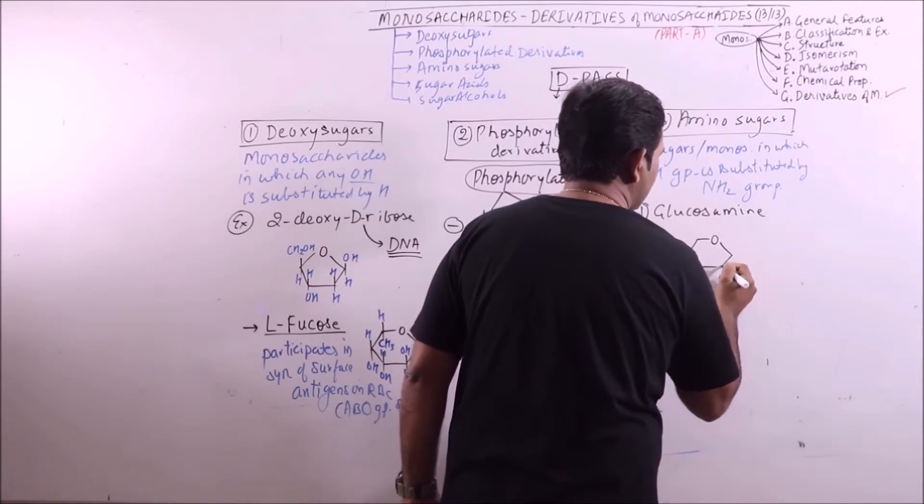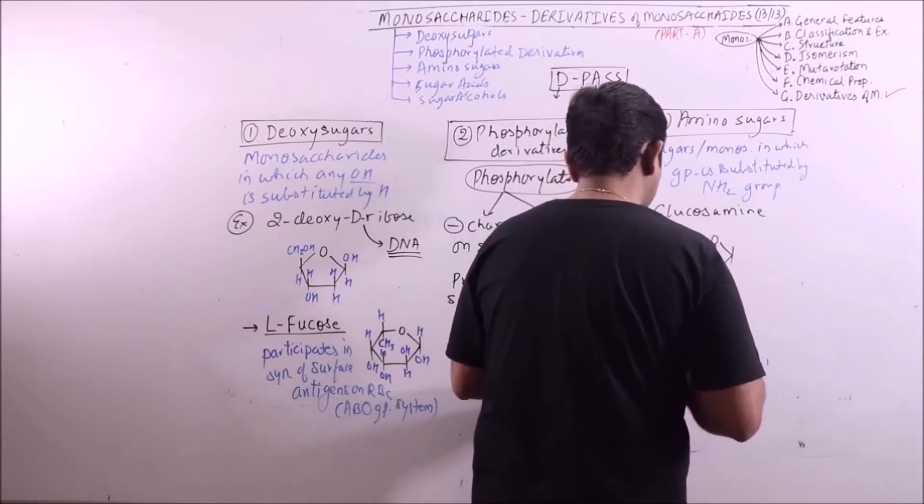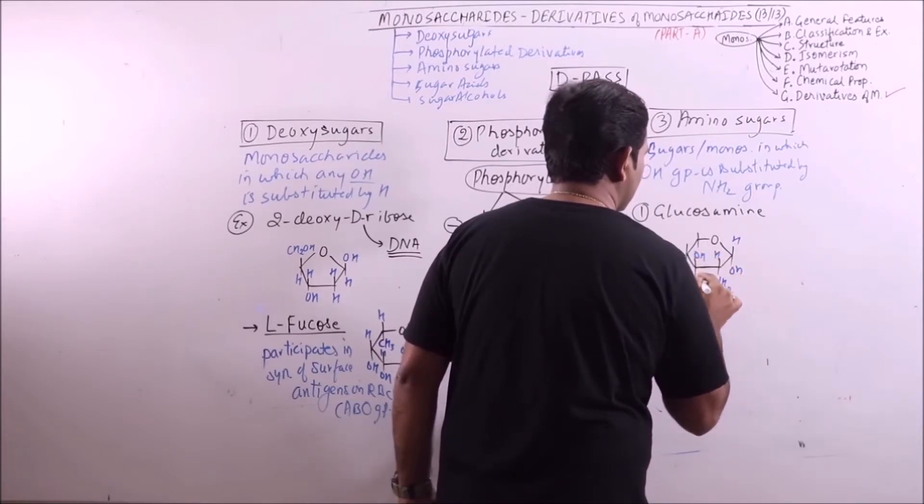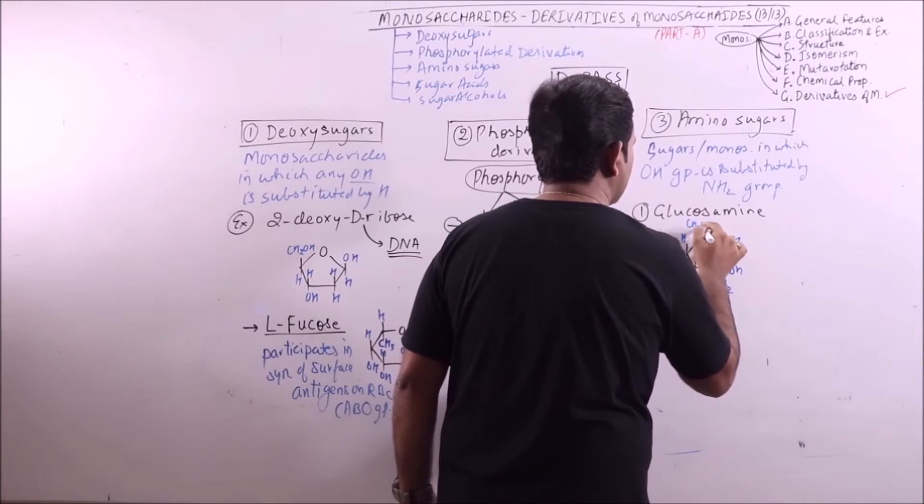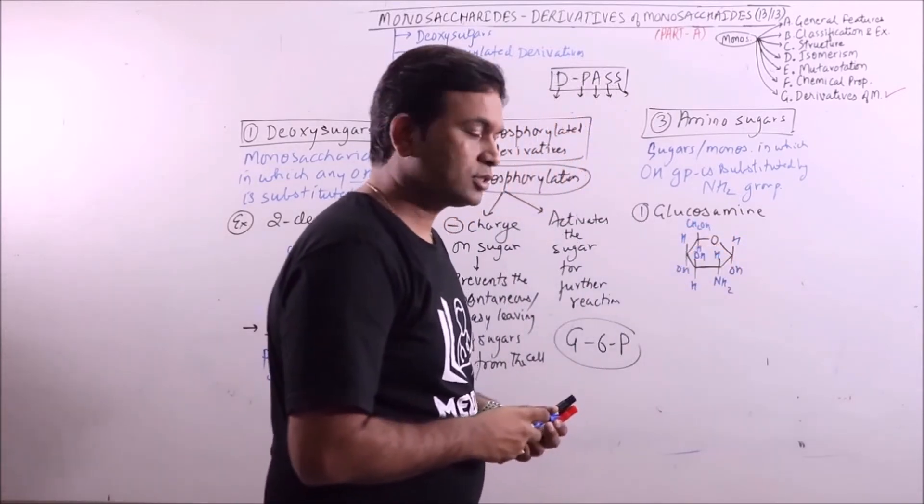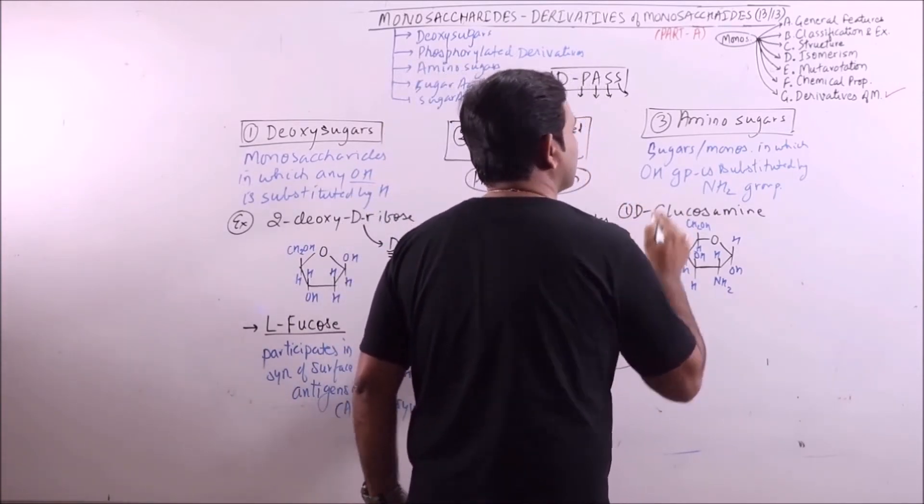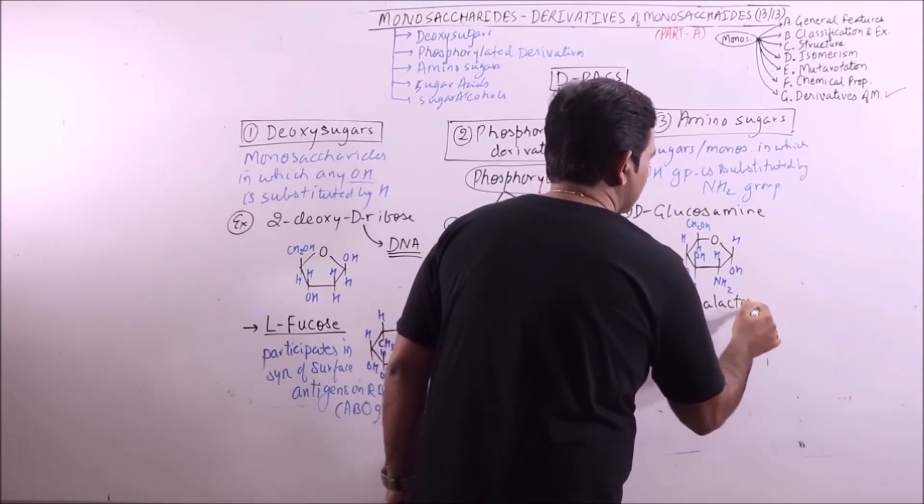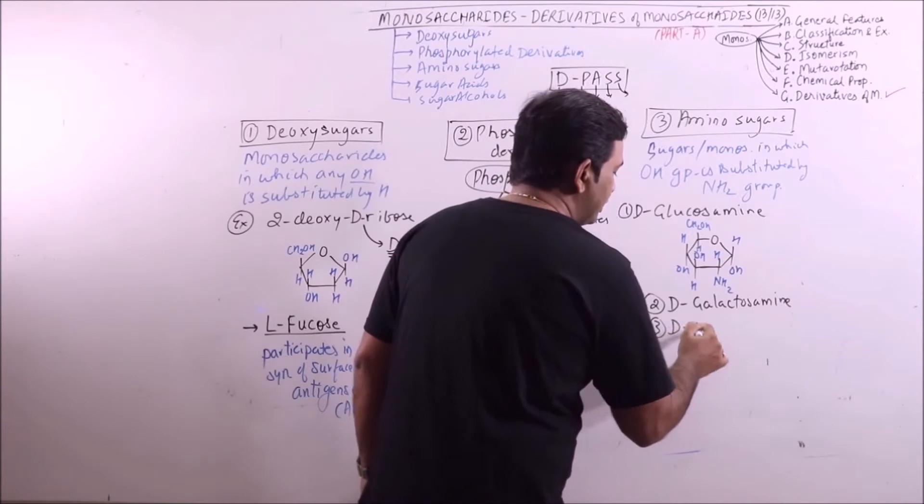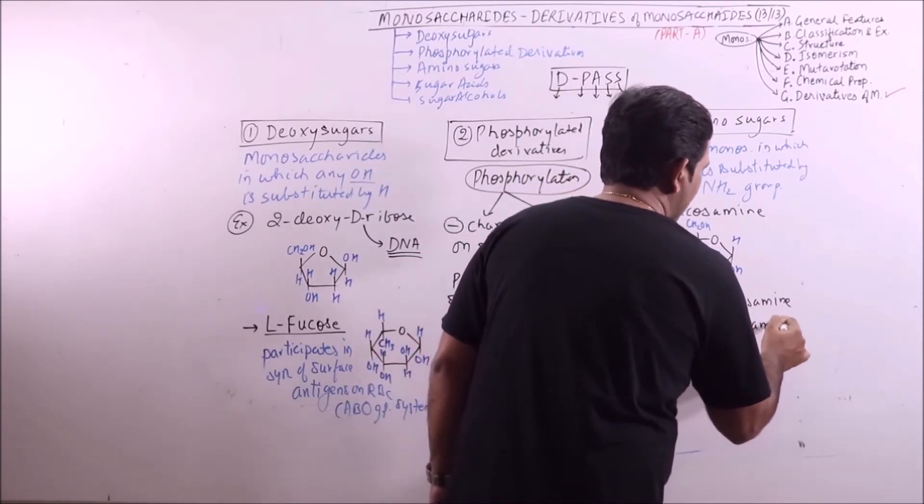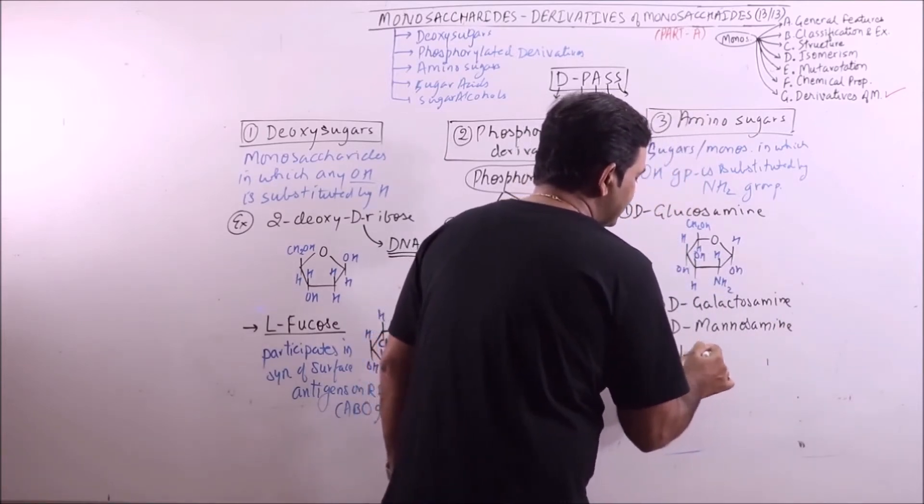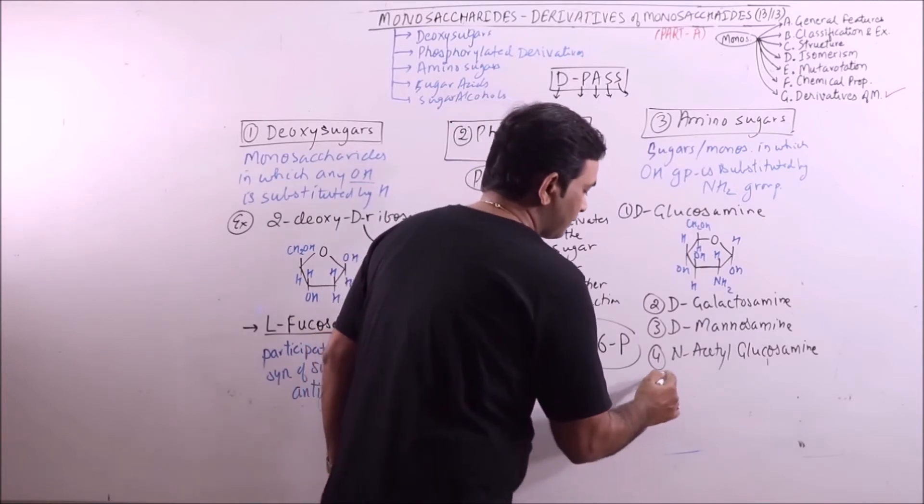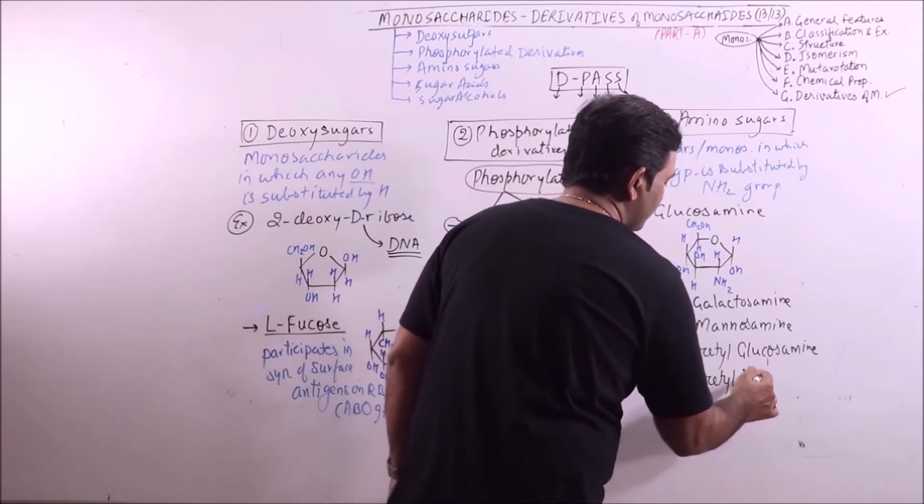Now the structure of glucosamine. The second, in the same way, galactosamine can be synthesized. N-acetyl glucosamine, N-acetyl glucosamine, which is acetylated derivative, it can also be synthesized.